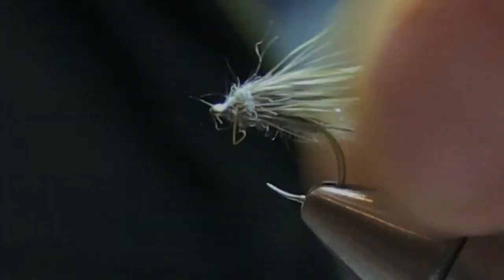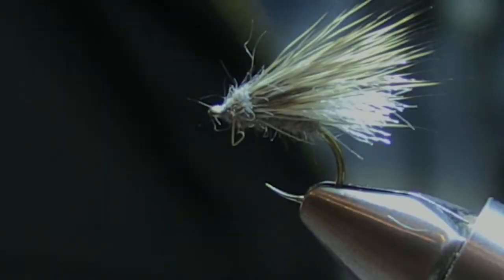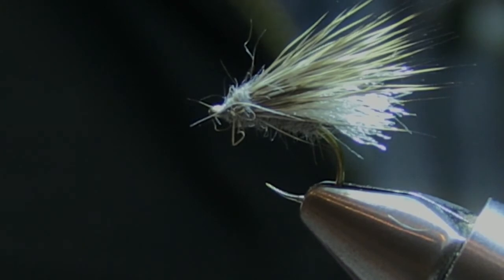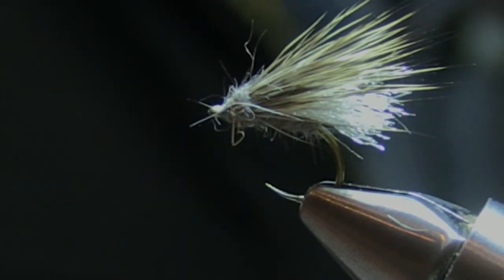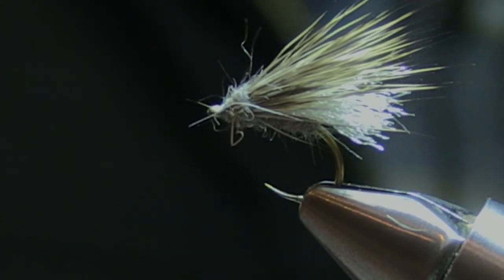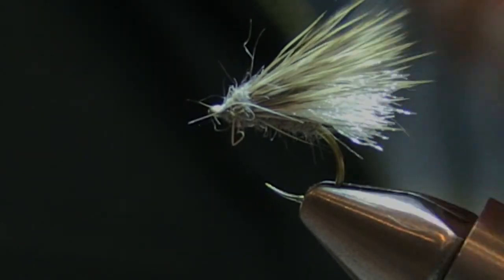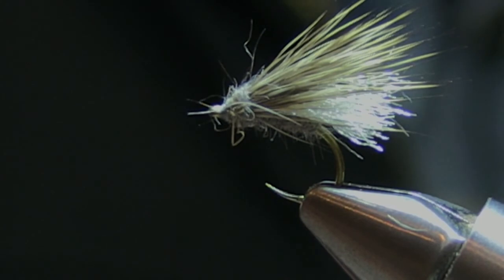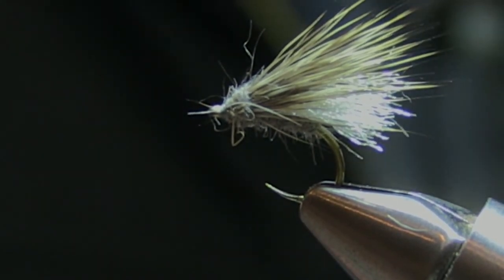Now when you get to fish that, all I do is stroke in some floatant initially, and thereafter I just treat it with dry fly shake. And you can catch literally 20 or 30 fish on that same fly. Very robust fly. And in the directions on fishing it, of course it's equally good upstream, downstream, skidded—a very versatile fly, the Antron Caddis.